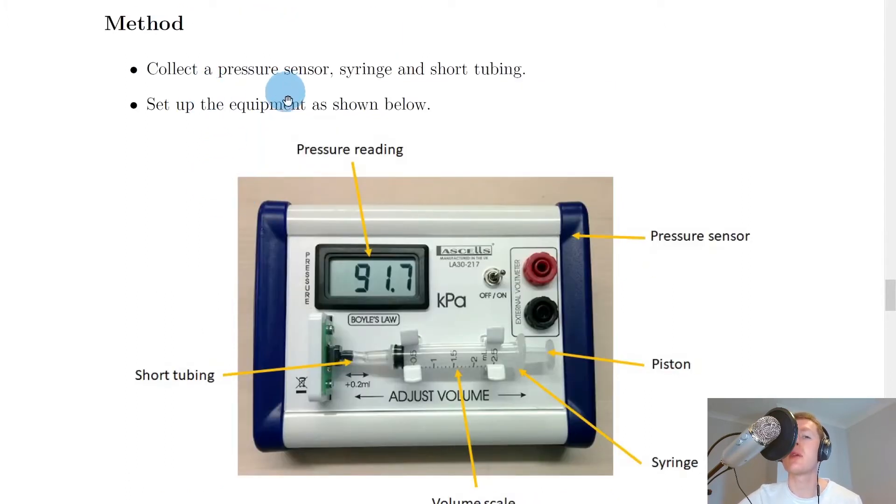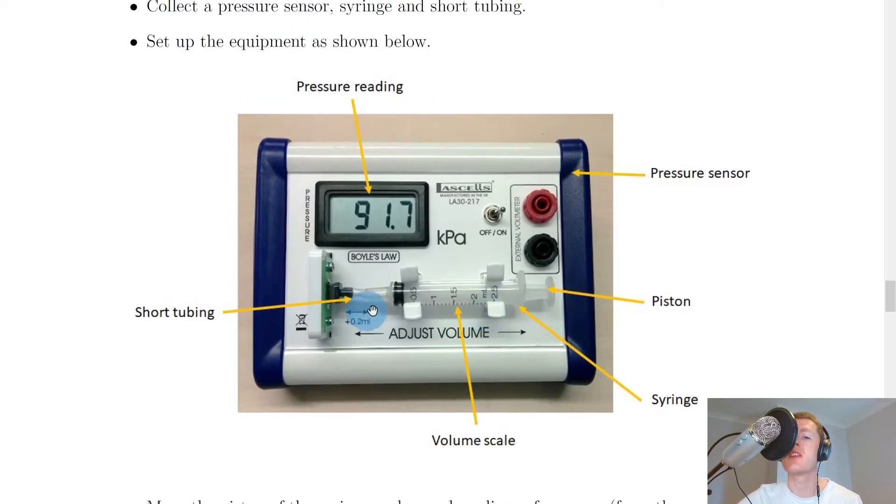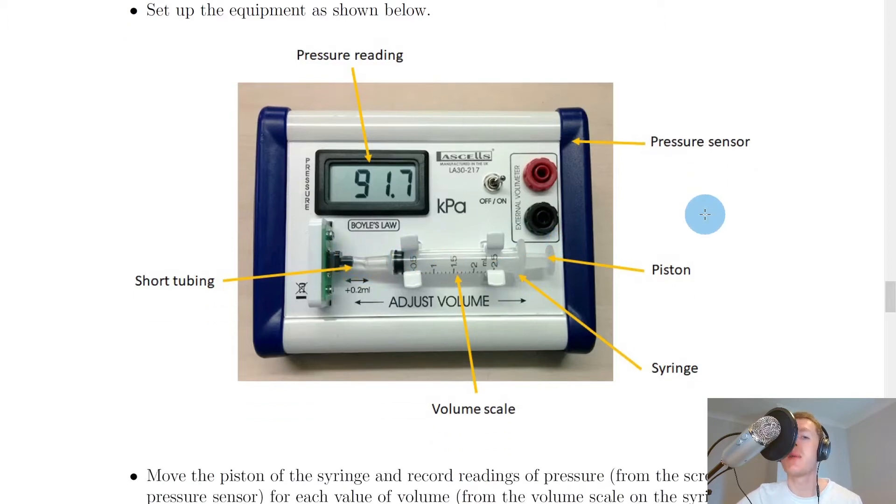What you would need to do is collect a pressure sensor, the syringe which attaches onto the pressure sensor, and what we call short tubing. You would set the equipment up as shown in the picture. We get a pressure reading on the scale, an on-off button to turn the device on, and it works through batteries plugged in at the back. We've got the short tubing at a distance of 0.2 millilitres, then our syringe with a piston which we can move back and forth to adjust the volume, and a volume scale on the syringe itself.